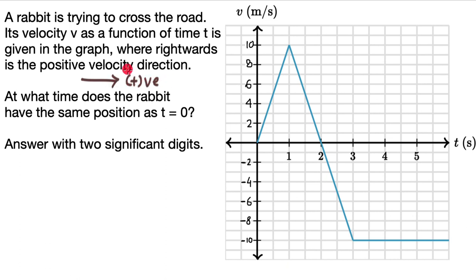So this is the positive velocity direction. At what time does the rabbit have the same position as t equal to 0? We know that at t equal to 0, the rabbit is at a position of 0 — it's at the origin. It means it has no displacement at time t equals to 0. Delta x is 0 at t equals to 0.